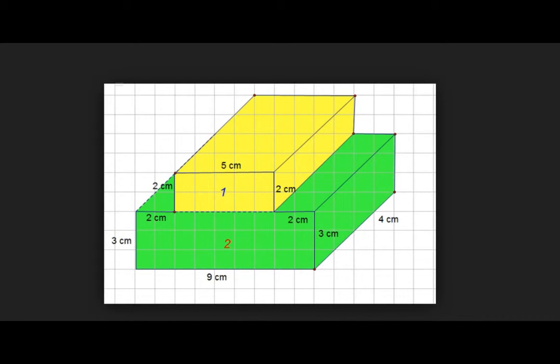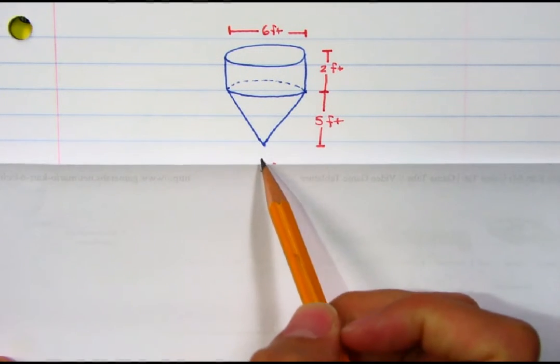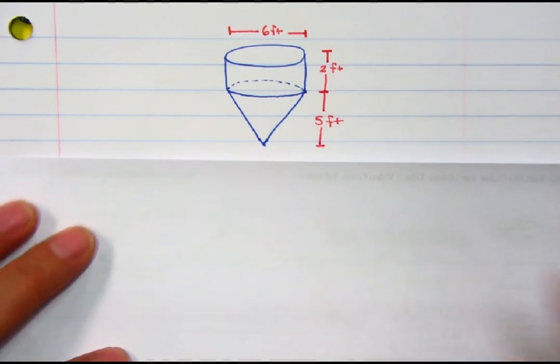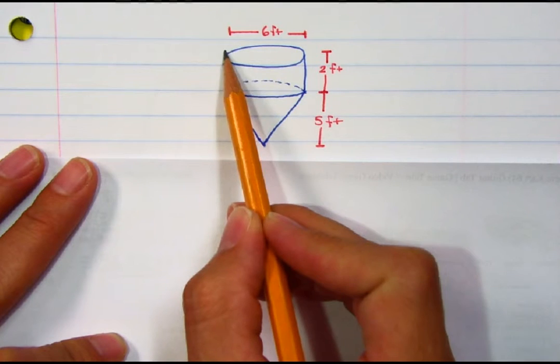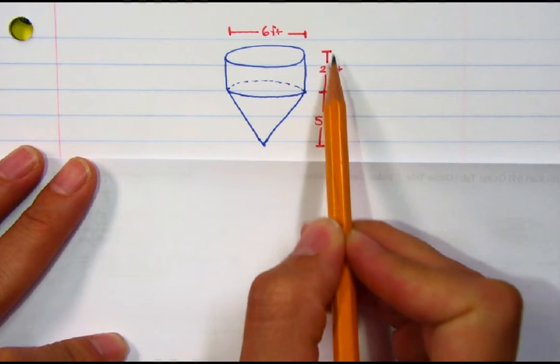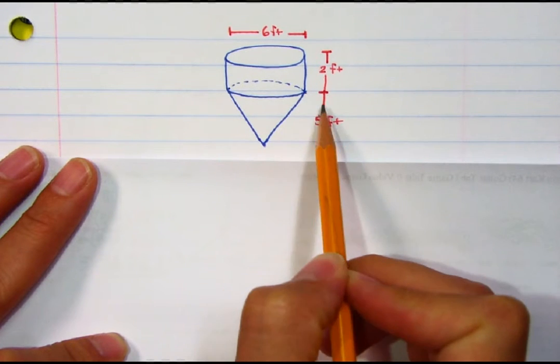Let's see if we can find the volume of this composite figure. If you take a look at this, I've got this cylinder, which is 6 feet across and 2 feet high, and then I have this cone that also is 6 feet across but 5 feet high.